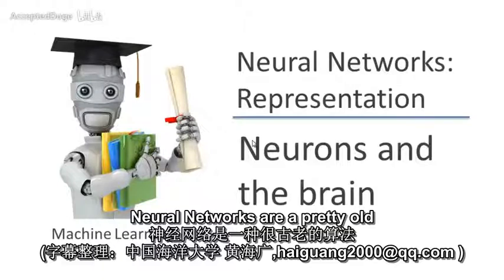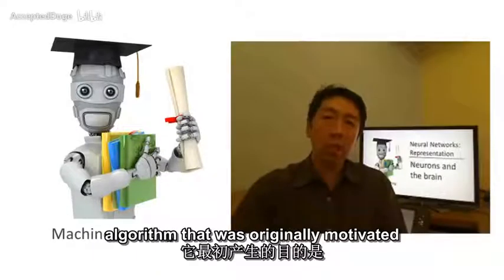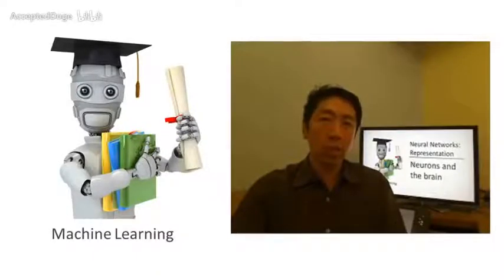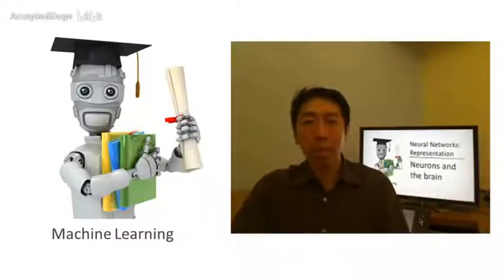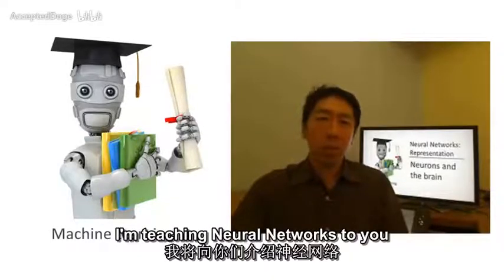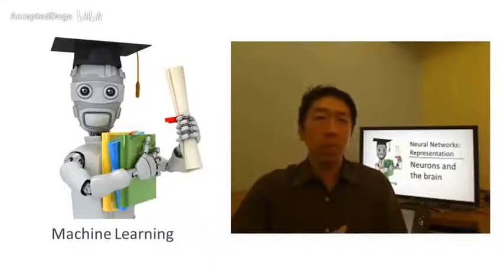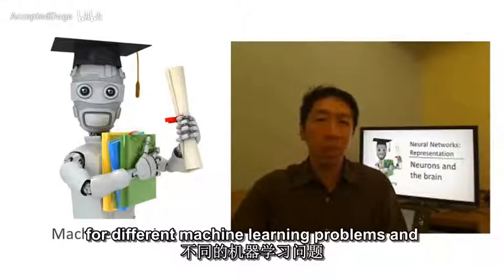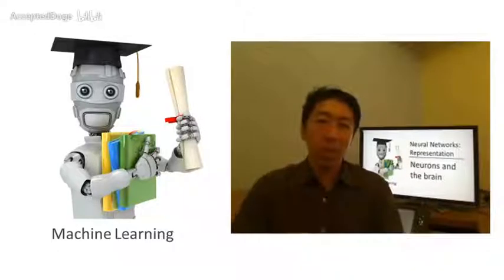Neural networks are a pretty old algorithm that was originally motivated by the goal of having machines that can mimic the brain. In this class, I'm teaching neural networks because they work really well for different machine learning problems, and not certainly not just because they're biologically motivated.